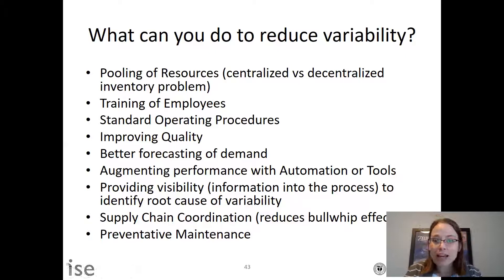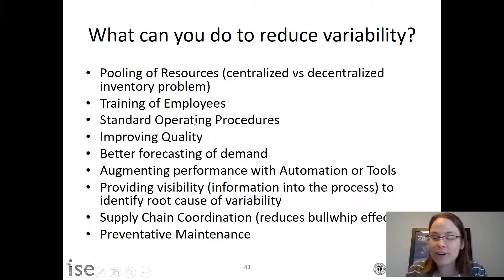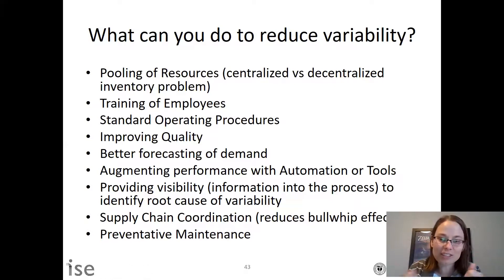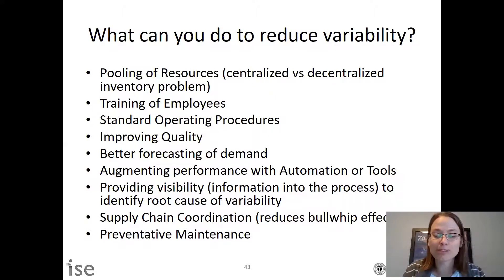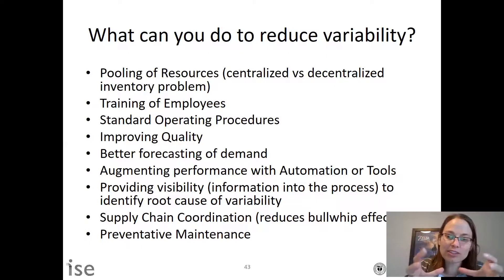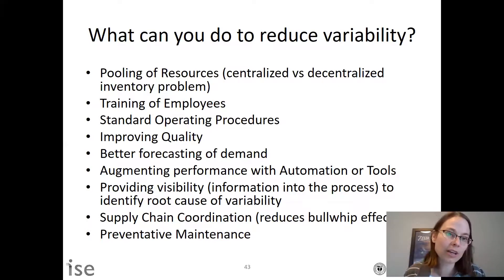What can you do to reduce variability? Many approaches are industrial engineering principles: training employees, improving quality, having standard operating policies. In supply chain specifically, pooling of resources is key — centralized pooling of inventory requires less safety stock than decentralized inventory. This applies to other types of capacities too. One central pool of resources versus many separate ones can greatly reduce variability. Think of one large workstation with 10 machines centralized versus each working separately — centralized has lower variability.